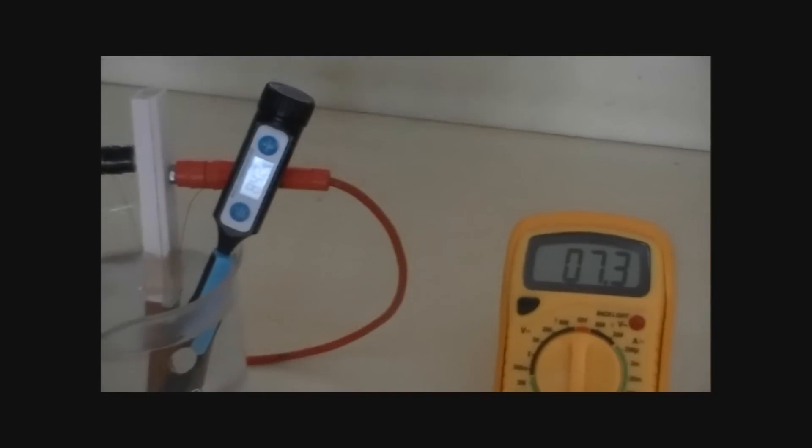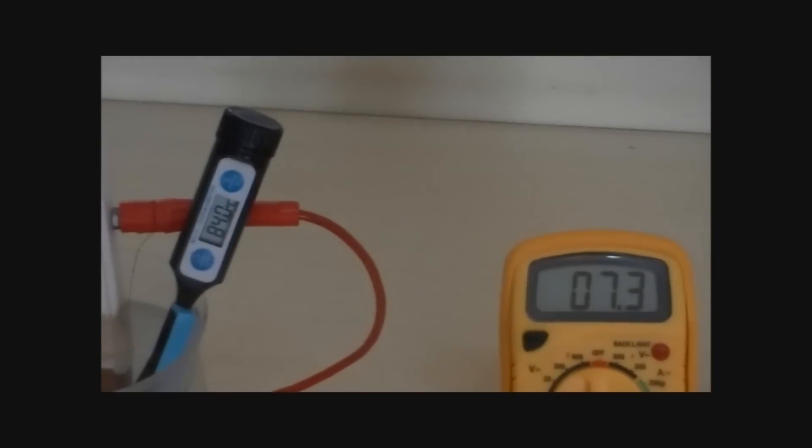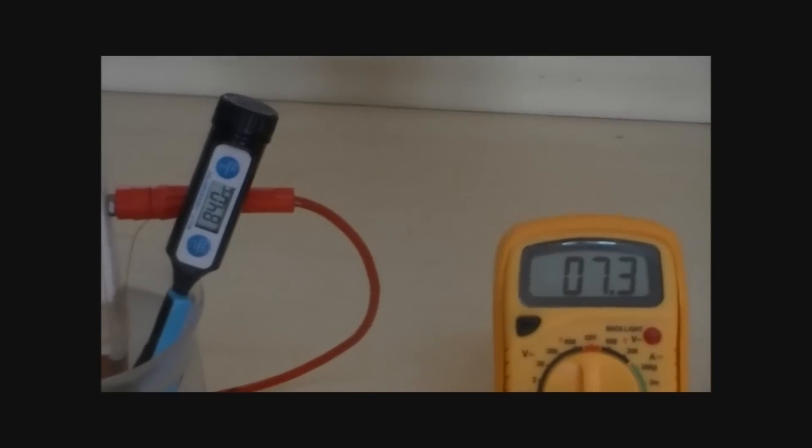The readings of the temperature in Kelvin and the resistance in ohm is tabulated in the tabular coil.